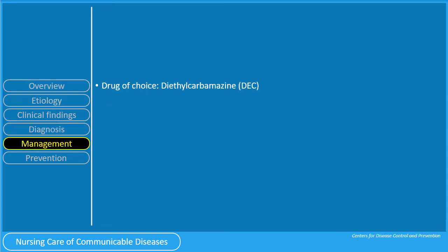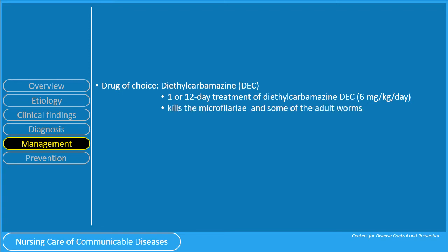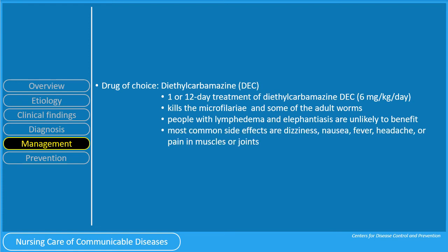The drug of choice is diethylcarbamazine or DEC, given as a 1- to 12-day treatment of DEC 6 mg per kg per day. DEC kills the microfilaria and some of the adult worms. However, people with lymphedema and elephantiasis are unlikely to benefit. The most common side effects of DEC are dizziness, nausea, fever, headache, or pain in muscles or joints.